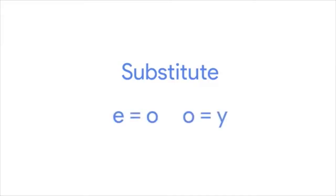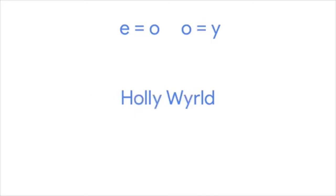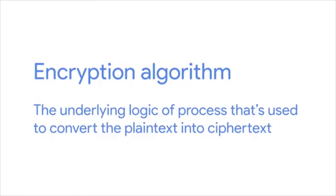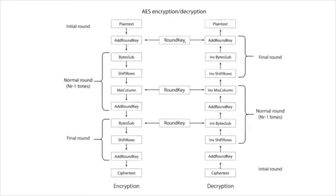For example, let's look at a simple cipher where we substitute e for o and o for y. We'll take the plain text 'hello world' and feed it into our basic cipher — the resulting ciphertext will be 'holly world.' A cipher is actually made up of two components: the encryption algorithm and the key. The encryption algorithm is the underlying logic used to convert the plain text into ciphertext — usually very complex mathematical operations. The key introduces something unique into your cipher. Without the key, anyone using the same algorithm would be able to decode your message.